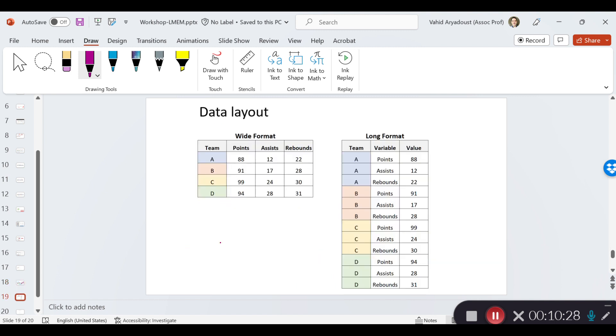Now, let's move on to the data layout. Here, I want to stress that we need to convert our data set if they are in a wide format into a long format. So the long format is typically what many statistical packages need and use in order to be able to run a linear mixed effect model. If you look at this slide, it's very obvious how to move from a wide format and convert it to a long format data set.